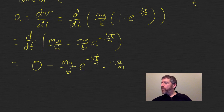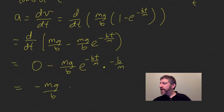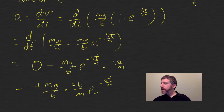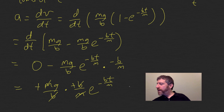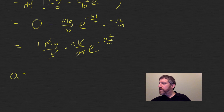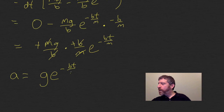So when I write this out I get negative mg over b times negative b over m times e to the negative bt over m. Notice that the negative times negative turns to positive, b cancels b, and m cancels m. What I'm left with is: the acceleration is equal to g times e to the negative bt over m. Let's see what this graph looks like.